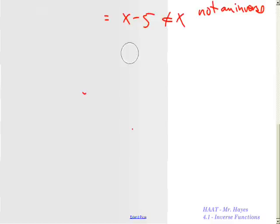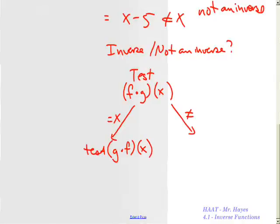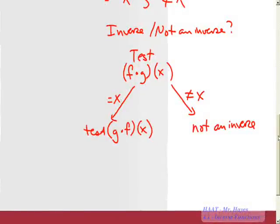So inverse, not an inverse. So first step, test f of g of x. Is it equal to x? If it equals x, then you're going to test g of f of x. If it's not equal to x, then it's not an inverse. Now remember, as I said, if it does work, that means you're going to test g of f of x. If that's equal to x, then it's an inverse. If it's not equal to x, then the whole thing is not an inverse.